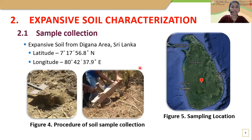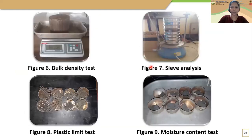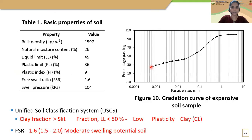For the research, expansive soil was collected from the Digan area. The sample location is shown in Figure 5. Index property tests, free swell tests, and constant volume swell pressure tests were conducted on raw samples. According to the Unified Soil Classification System, the soil was classified as low plasticity clay, and as per the free swell ratio, it was classified as moderate swelling potential soil.